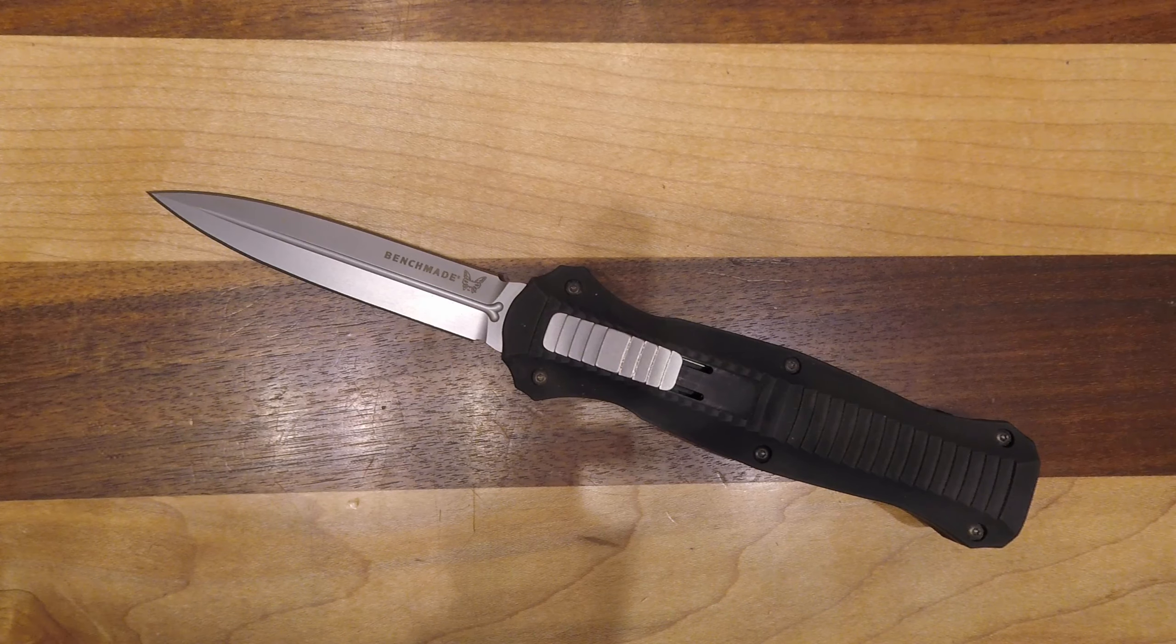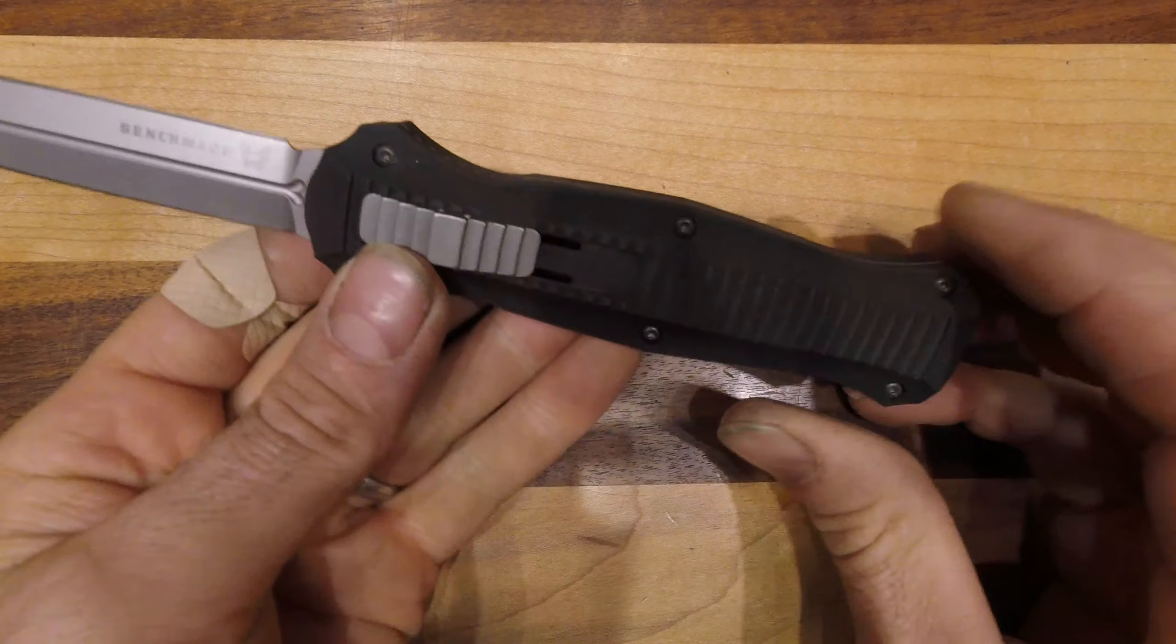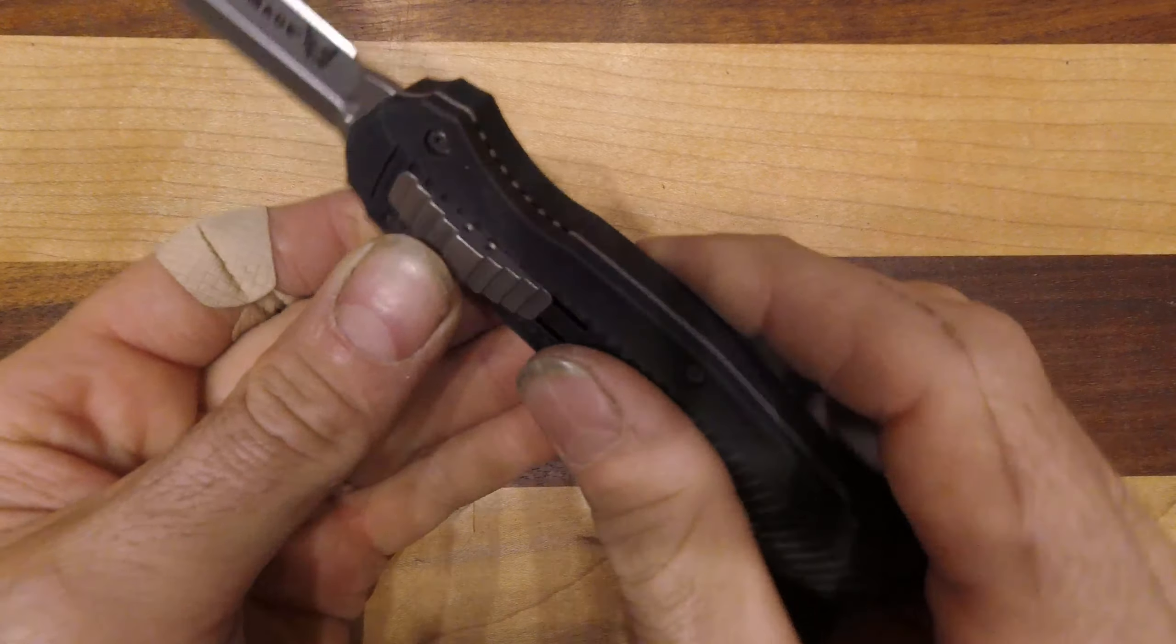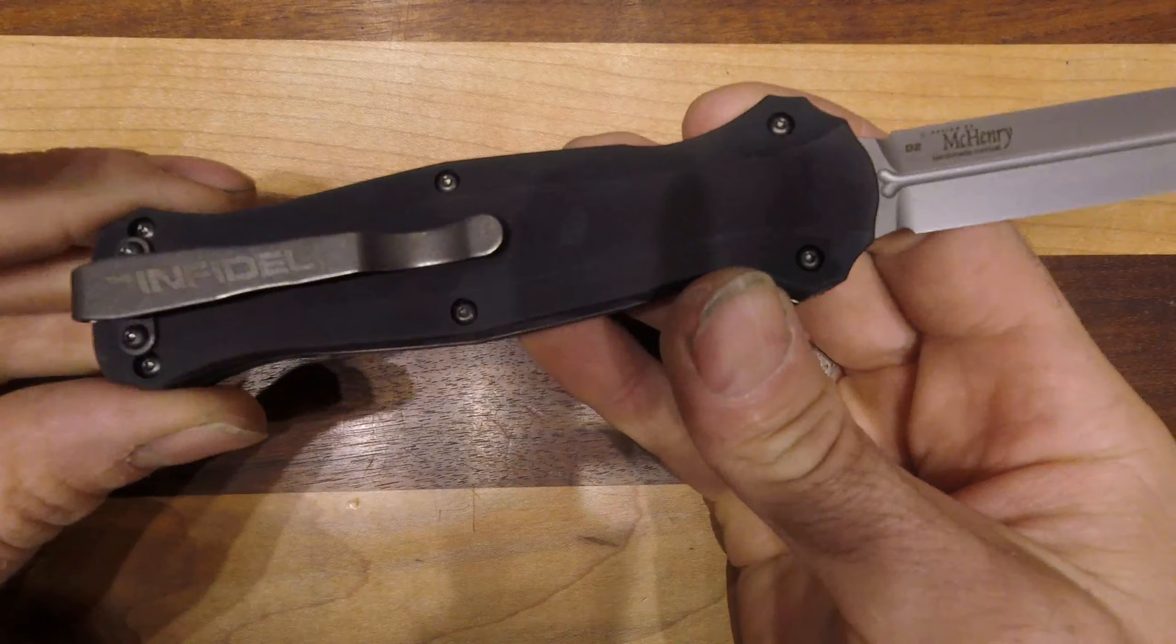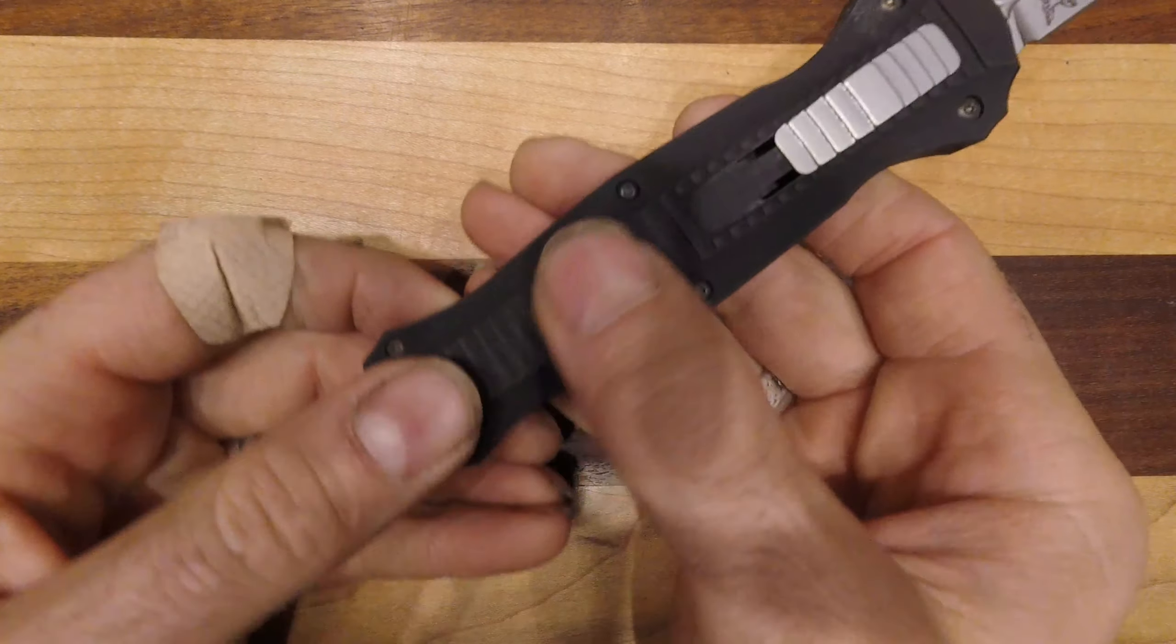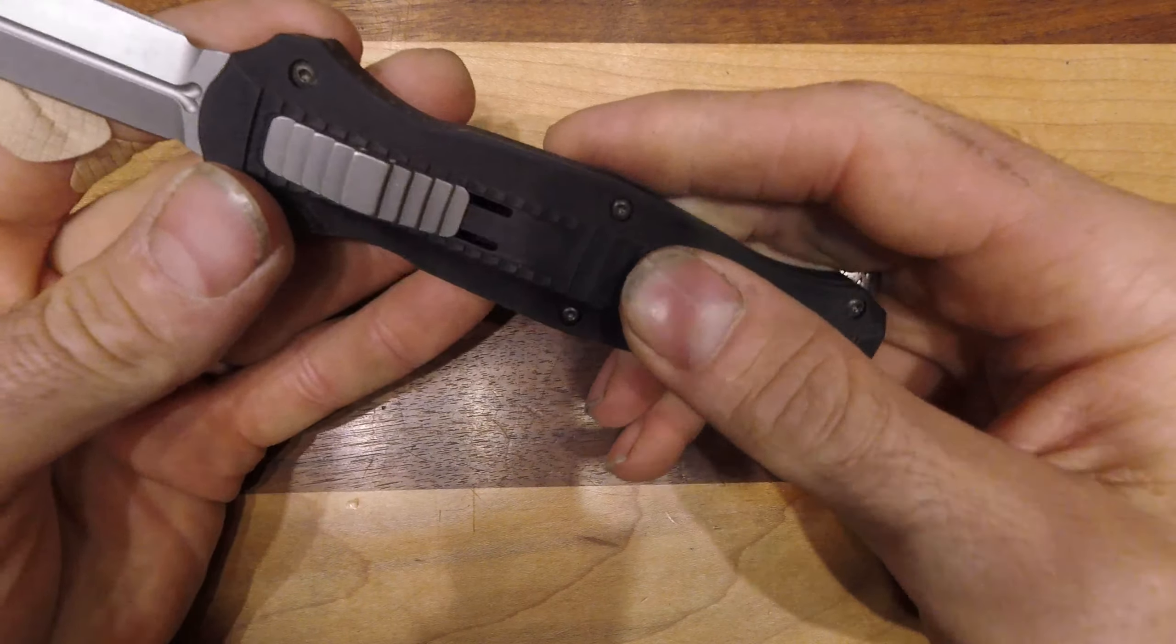Here we have the Benchmade Infidel. This is the satin blade version of the Infidel. This has an aluminum handle and a D2 blade. Comes standard with a deep carry pocket clip and the entire front face of this Infidel is textured.